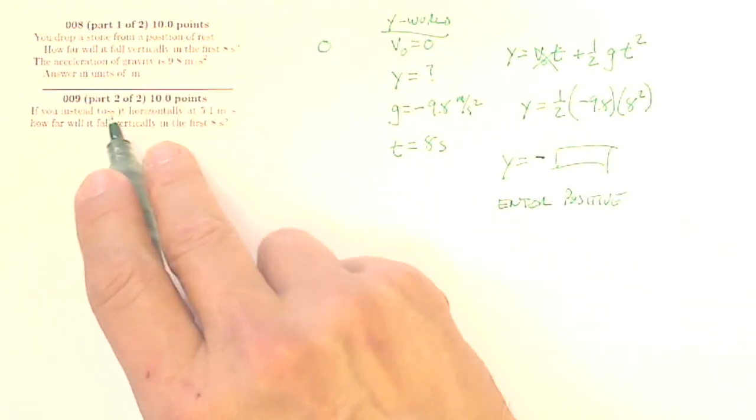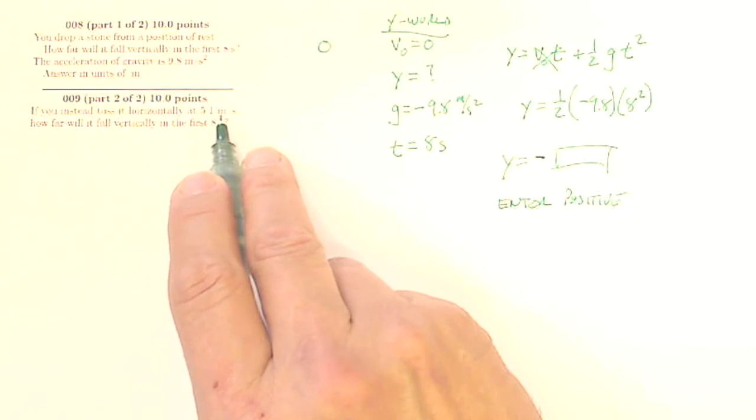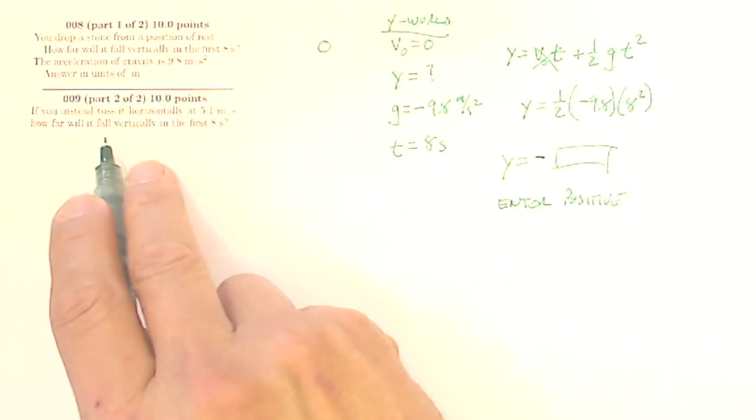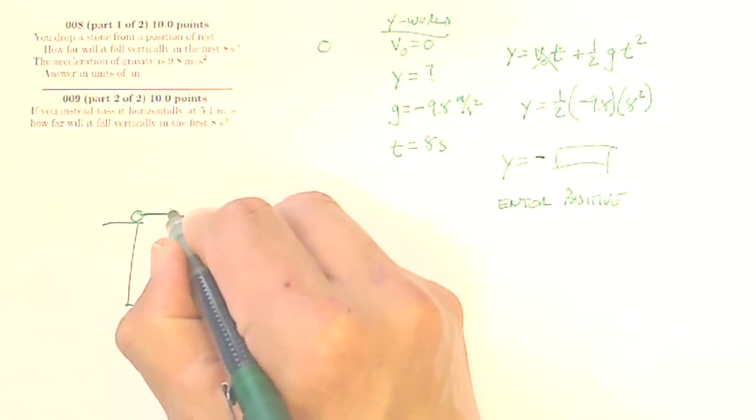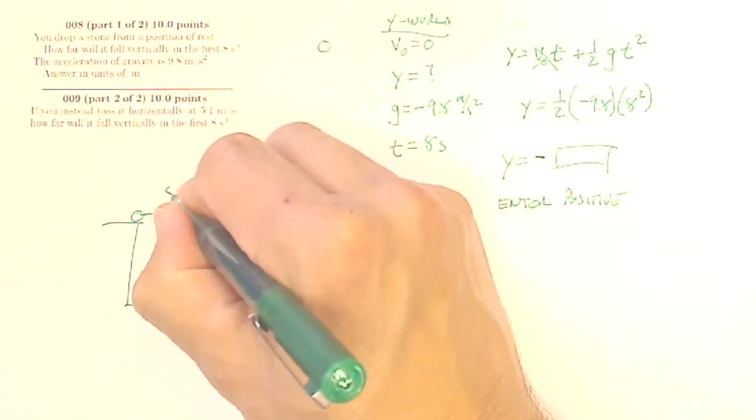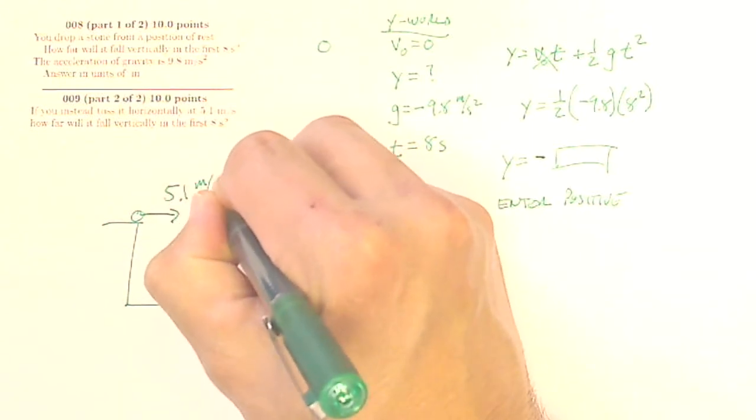Now question 9 says, if you instead toss it horizontally at 5.1 meters per second, how far will it fall vertically in the first 8 seconds? So now what I've got is a horizontal projectile problem, where this thing has an initial horizontal velocity of 5.1 meters per second.